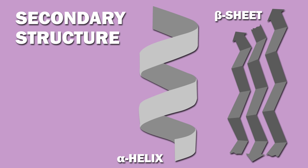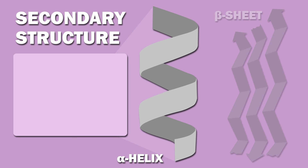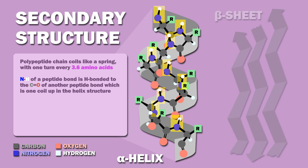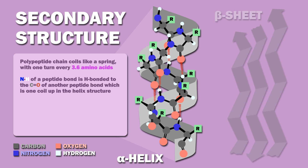Secondary structures include alpha helices and beta sheets. An alpha helix occurs where a polypeptide chain coils like a spring, with one turn every 3.6 amino acids. In alpha helices, the NH of a peptide bond is hydrogen bonded to the C double bond O of another peptide bond which is one coil up in the helix structure.